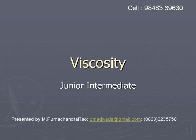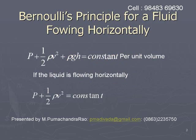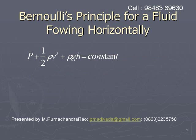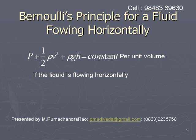In the case of the tube of flow, we have considered that two ends are at different heights. Instead of considering different heights, if we consider a tube laid horizontally — that is, when a fluid is flowing horizontally — then the relation will be reduced to the form P plus half rho v squared is constant.